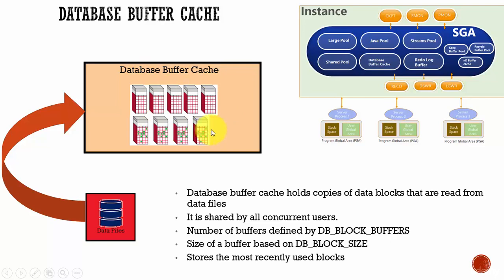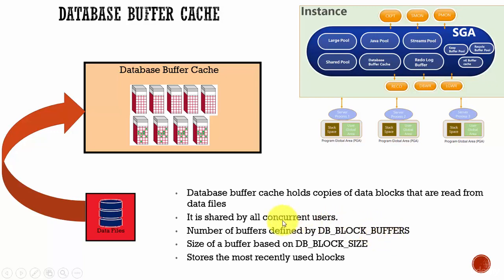If the data is not found in the database buffer cache and it has to read from the data files, then it is a cache miss. The total number of buffers is defined by the parameter db_block_buffer, and each buffer size is dependent on the parameter db_block_size.